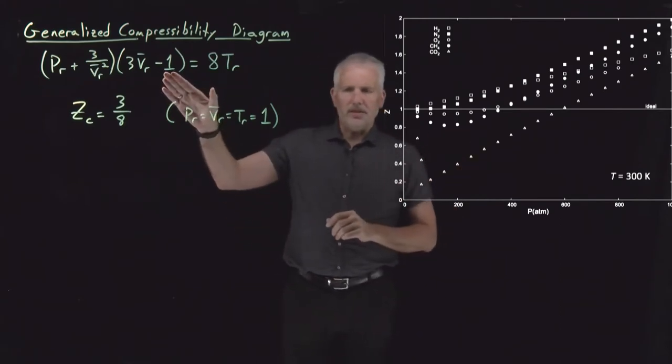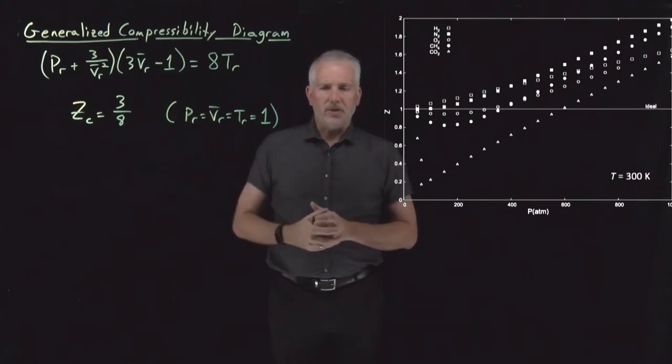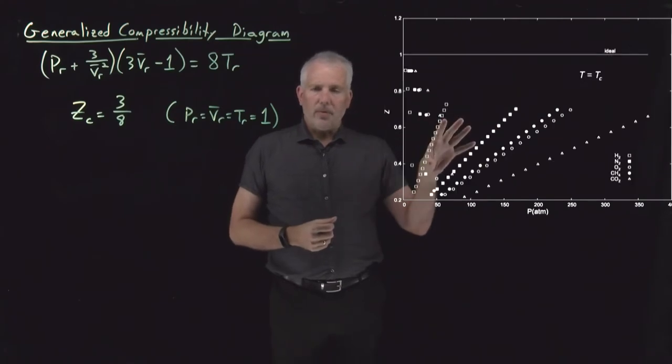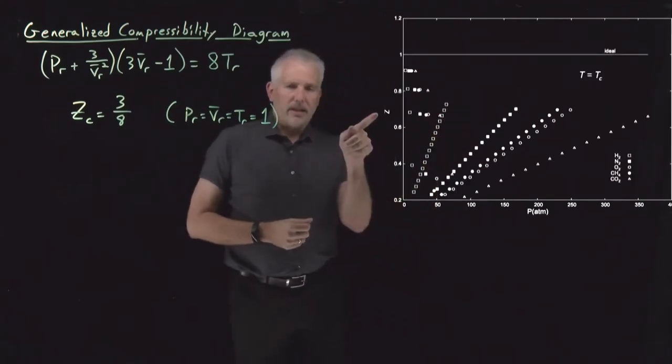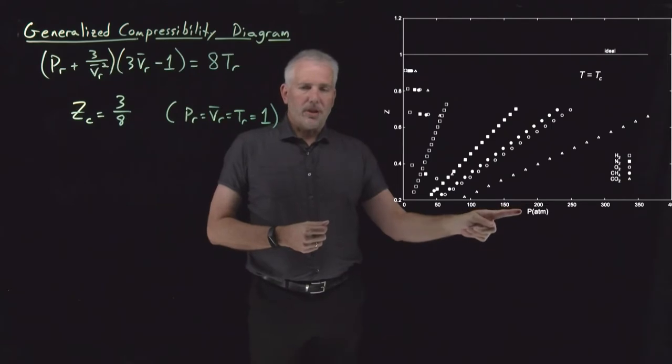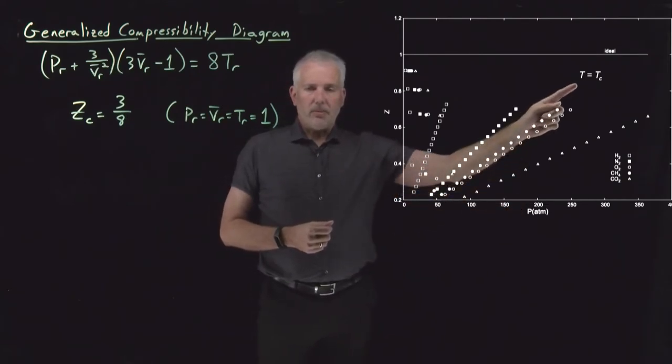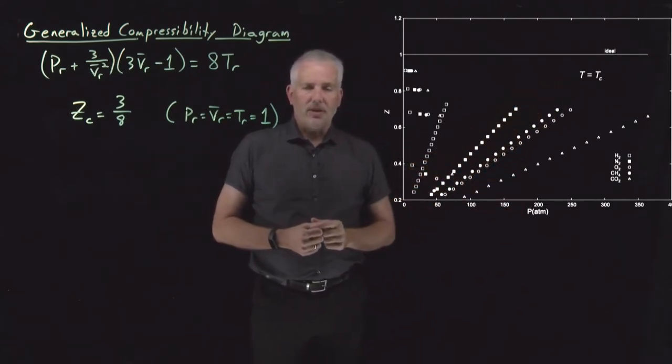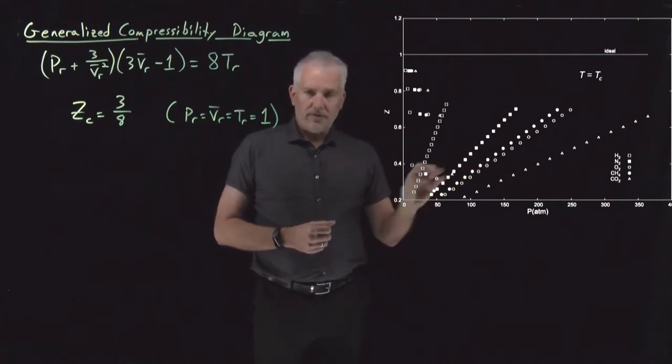But that doesn't seem like it's what this generalized van der Waals equation is predicting. So first let's take a closer look at the critical point. So if I replace this graph with one showing the properties, again compressibility factor as a function of pressure, but specifically not at 300 Kelvin anymore, but plotting each gas at its own critical temperature.